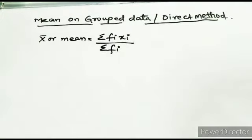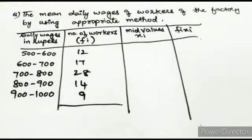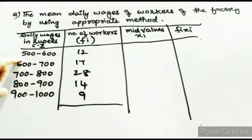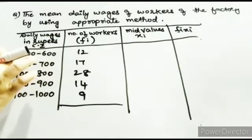Let's do one important problem related to mean on grouped data using the direct method. The problem is: find the mean daily wages of workers of a factory using the appropriate method. Whenever you get class intervals, this daily wages column is also called class intervals (CI). Daily wages in rupees from 500 to 600 — the number of workers is 12, meaning 12 workers earn wages from 500 to 600 rupees.